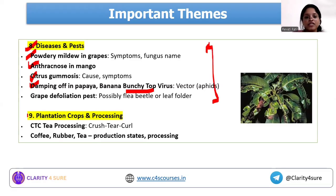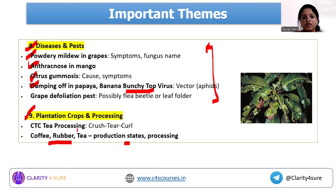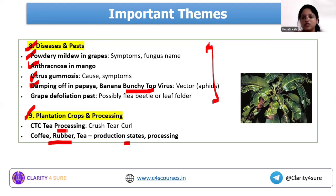Plantation crops and their processing is the final area to cover. Key crops include coffee, rubber, and tea. You need to understand production figures, the highest production state for each, and different processing terms. For example, CTC processing is specifically associated with tea. Make sure you understand these processing concepts thoroughly.